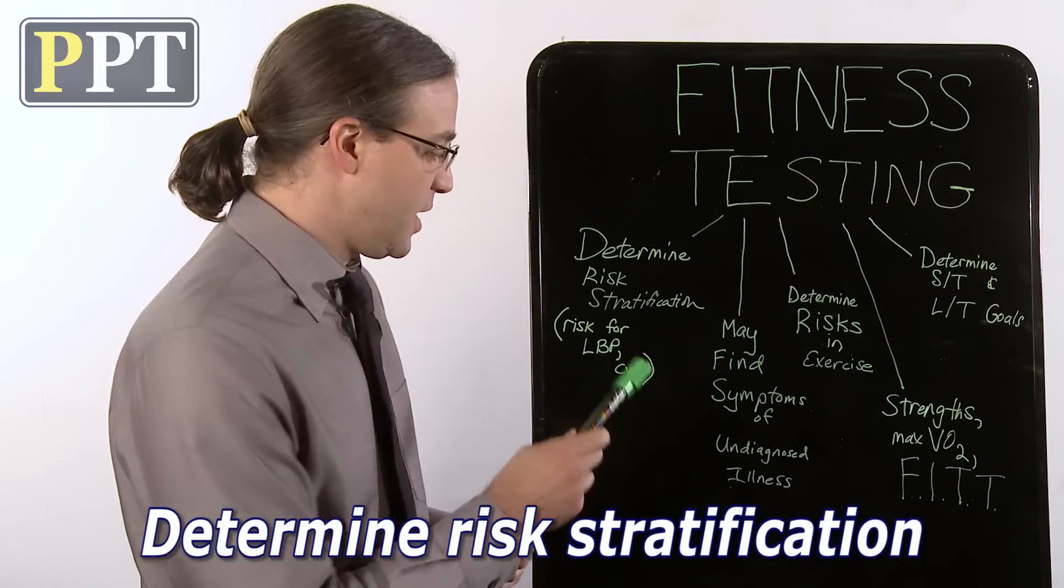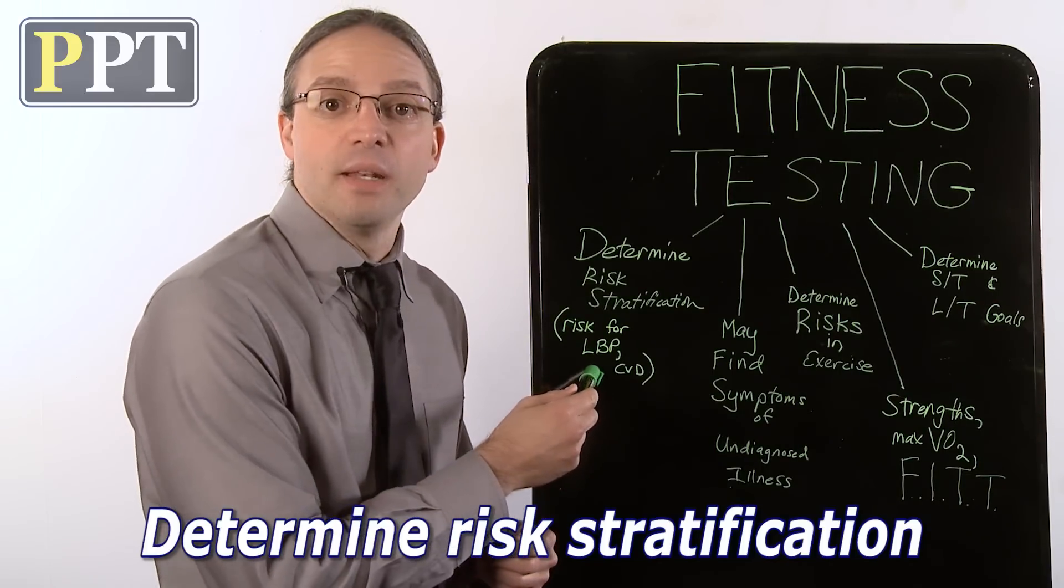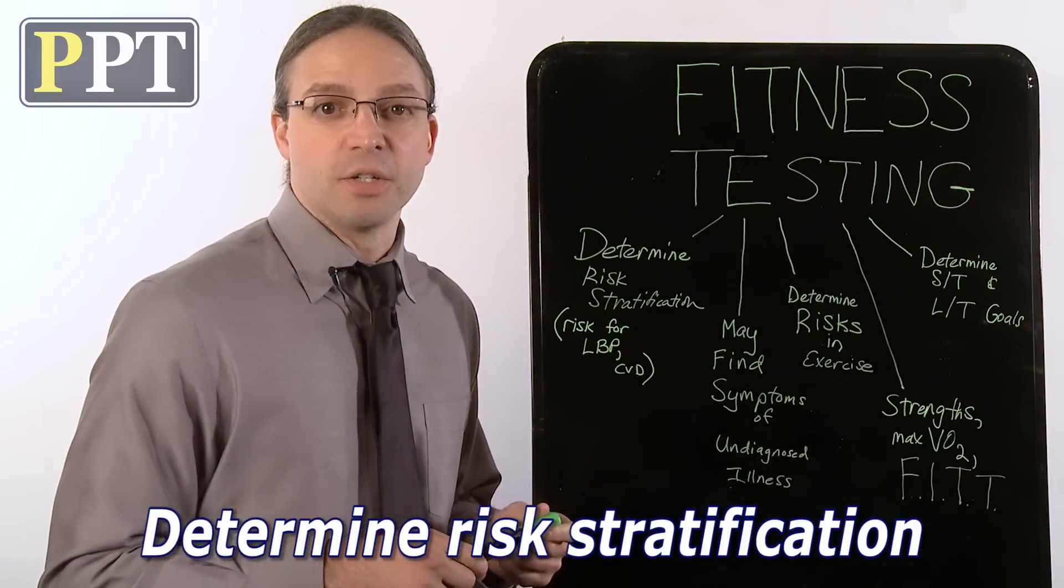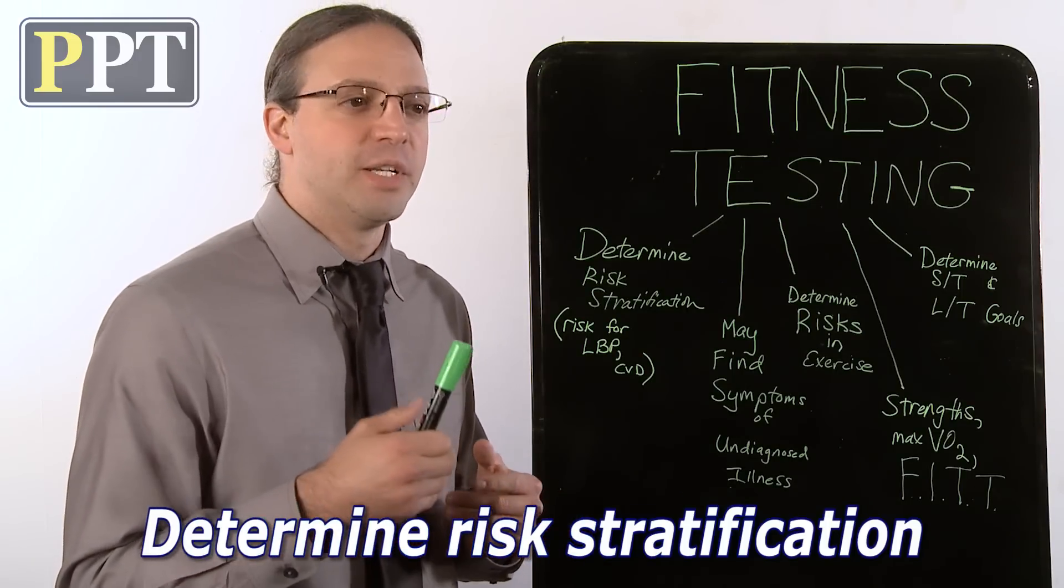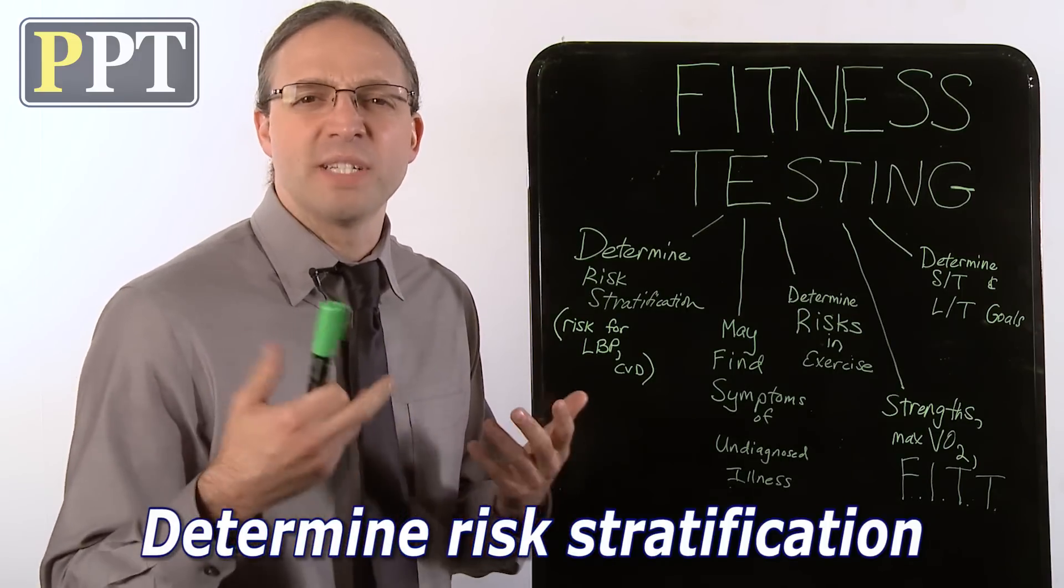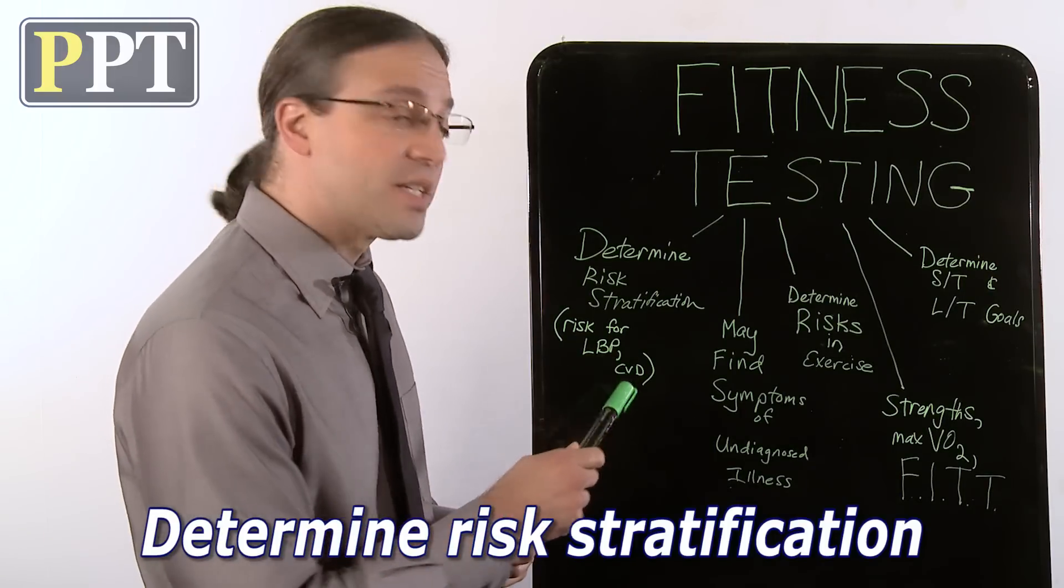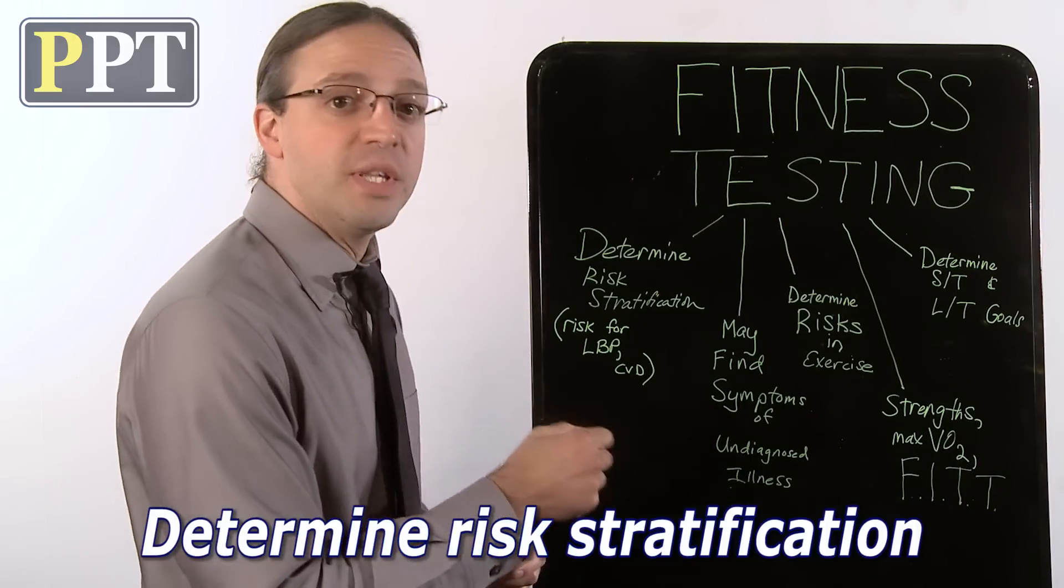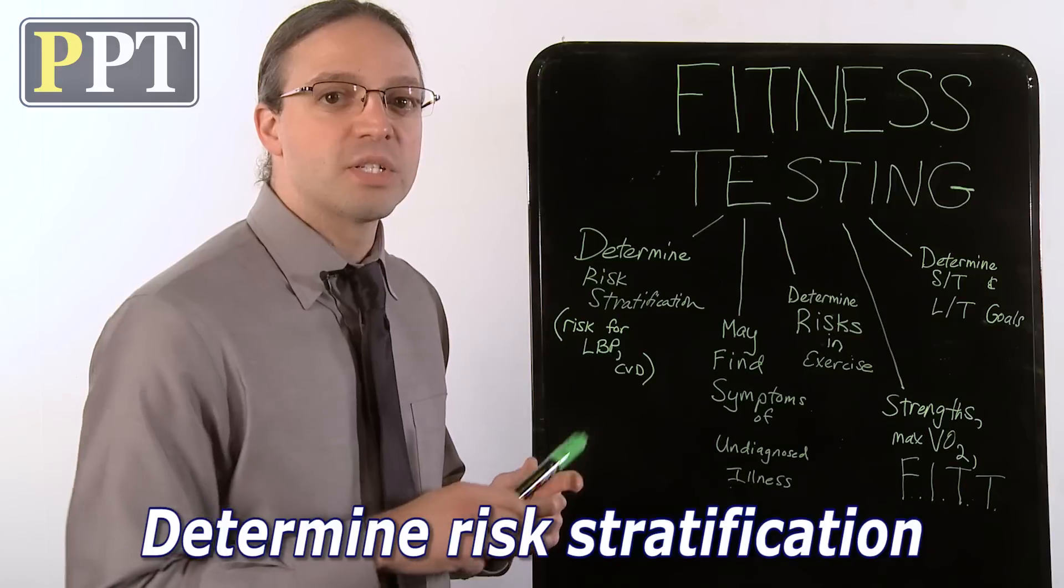For example, their flexibility scores, especially in the hamstrings and the erector spinae, might indicate a high risk for low back pain. We also would look at cardiovascular factors like body composition, and you might do the caliper method, or you might do a step test, or a Rockport, whatever testing you want to do. We're going to determine a lot there about their risk for cardiovascular disease, and that's really critical as well. So look for these kind of factors, look for what your fitness testing tells you about risk stratification.